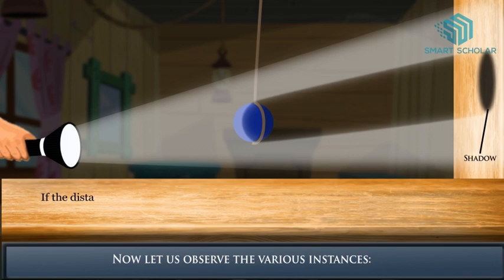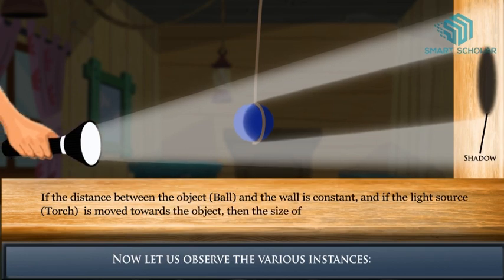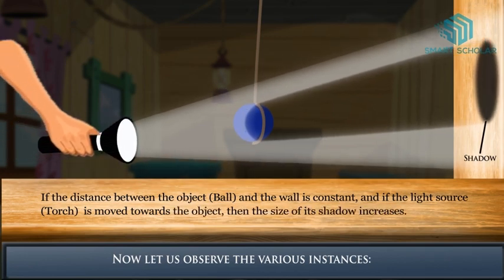If the distance between the object, which is the ball, and the wall is constant, and if the light source, which is the torch, is moved towards the object, then the size of its shadow increases.